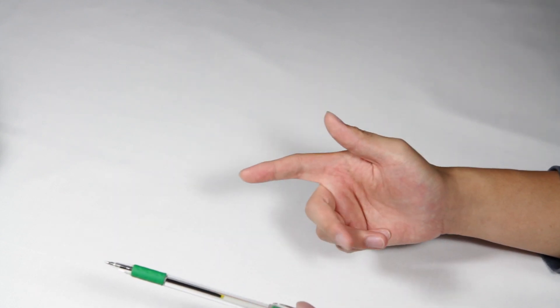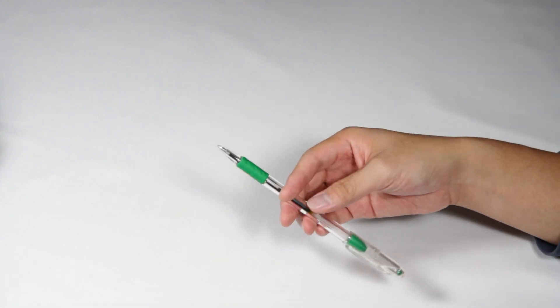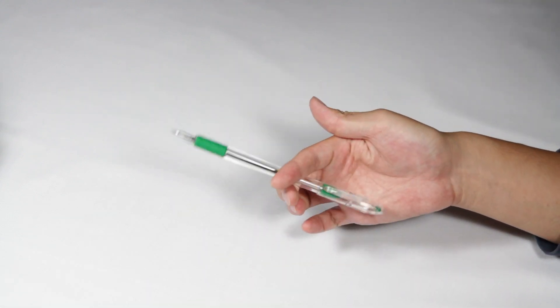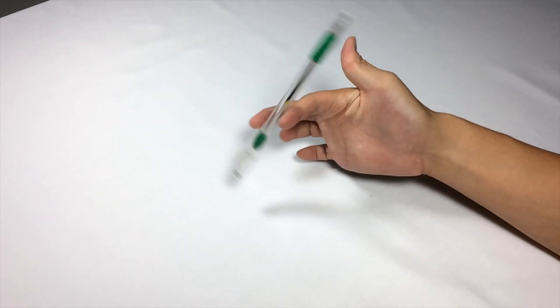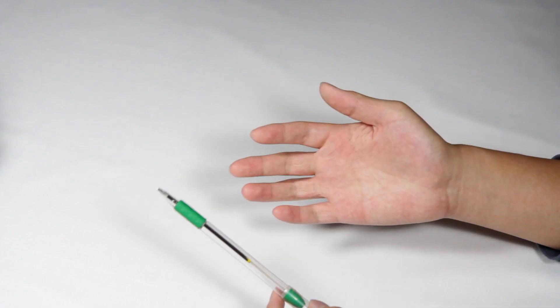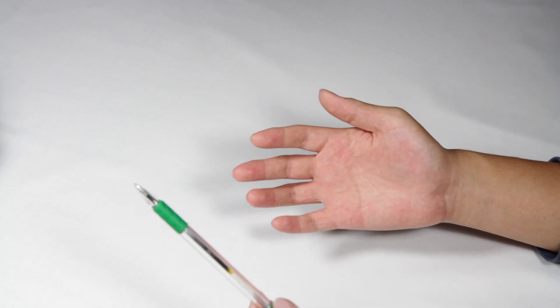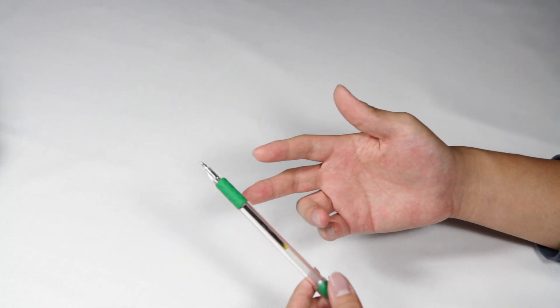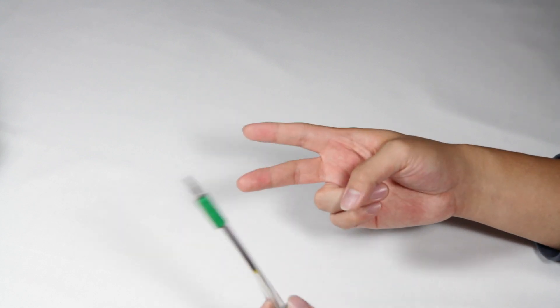So we're going to start with the index around because that is the first finger on your hand that's not the thumb. So the index around looks like this. As you can imagine, the concept is very similar to a thumb around, but you're doing it instead with your index finger and your middle finger in this case for the index around.